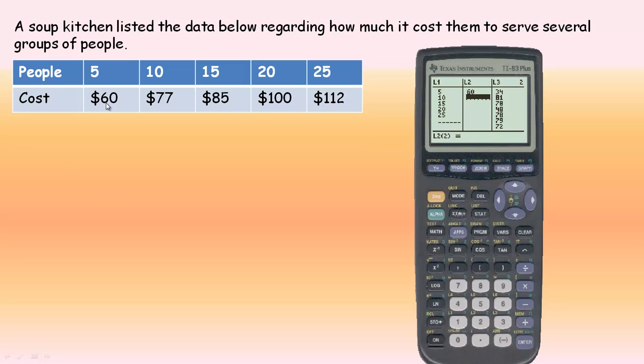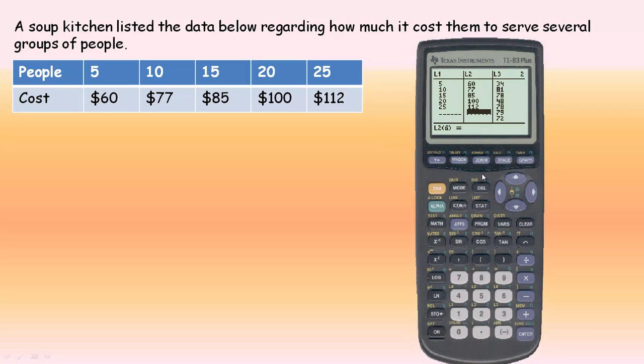I need 5, 10, 15, 20, and 25. Then we'll proceed over to the top of list 2 and start with 60. So 60, 77, 85, 100, and 112. Let me make sure I did that correctly. I did.